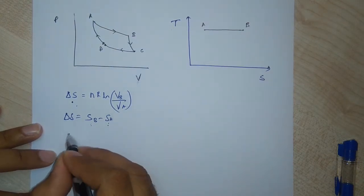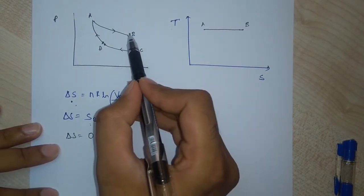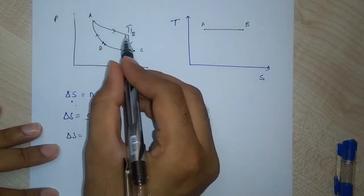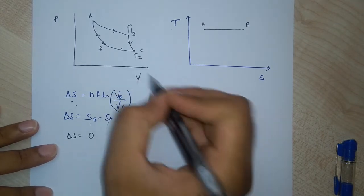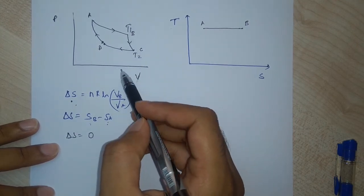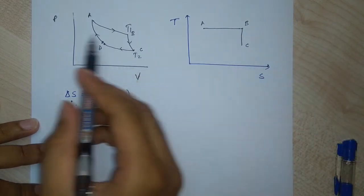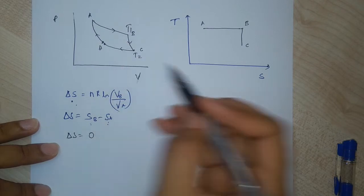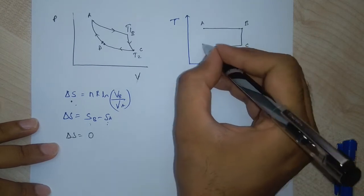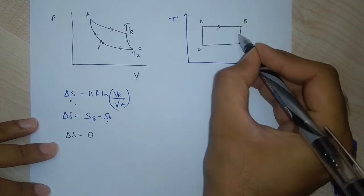For process BC, the change in entropy is zero for an adiabatic process. The temperature goes from T1 at point B to T2 at point C, but entropy is constant, so it plots as a vertical line. Similarly, the isothermal compression C to D gives a straight horizontal line where entropy is decreasing.